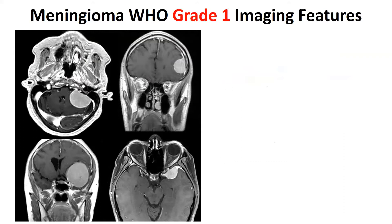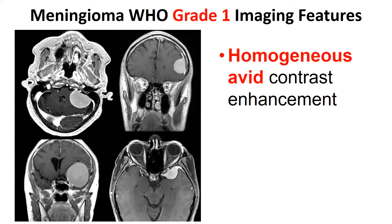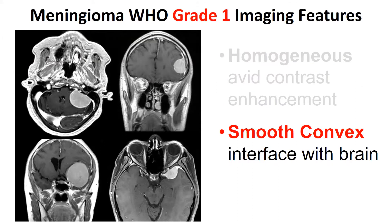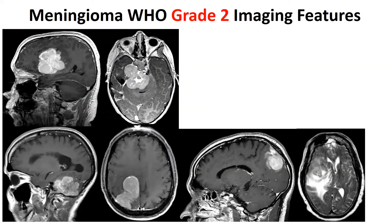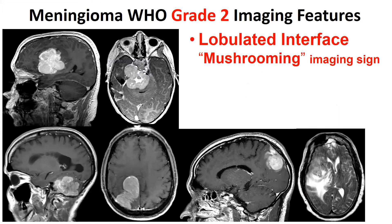WHO grade one — and I know the vast majority of participants are familiar with this. WHO grade one: homogeneous avid contrast enhancement, new cortex interface, brain surface, neural tail, classic tail — not pathognomonic, but highly characteristic. WHO grade two: major heterogeneity, high-grade meningioma, modulated interface.